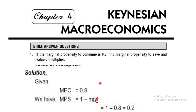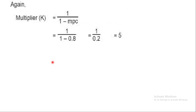To find the value of the multiplier, the formula is K = 1 upon (1 minus MPC). With MPC = 0.8, we get 1 upon 0.2, which equals 5. So the multiplier is equal to 5.